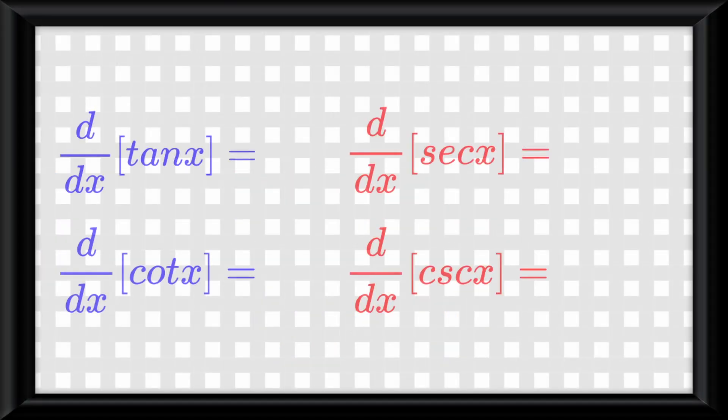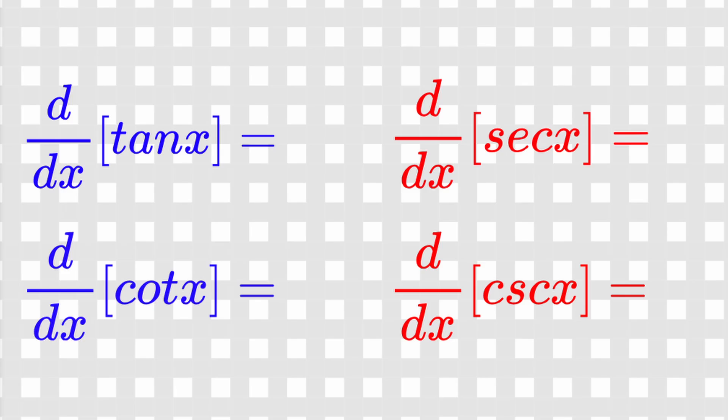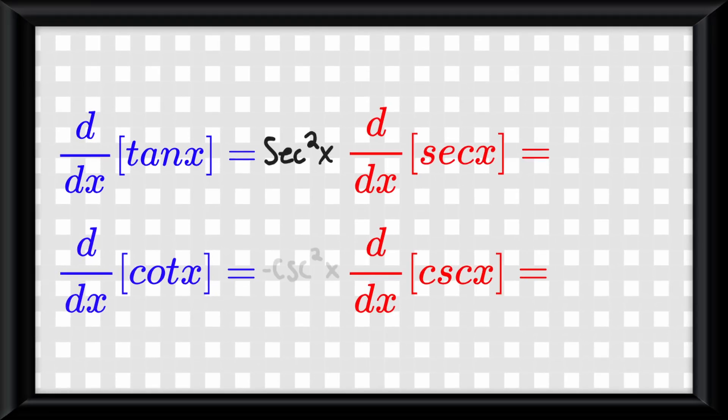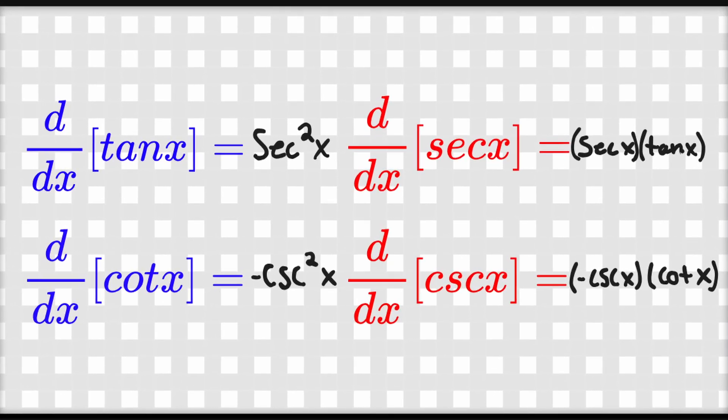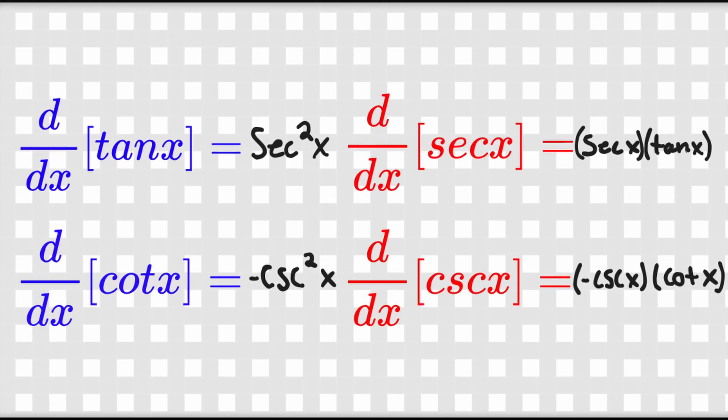Finally, now you have the rest of the trig functions. What are their derivatives? Simple. Secant squared of x, negative cosecant squared of x, secant of x times tangent of x, and negative cosecant of x times cotangent of x. You'll need to memorize these too, but I'm sure you can find some patterns to help you memorize them.